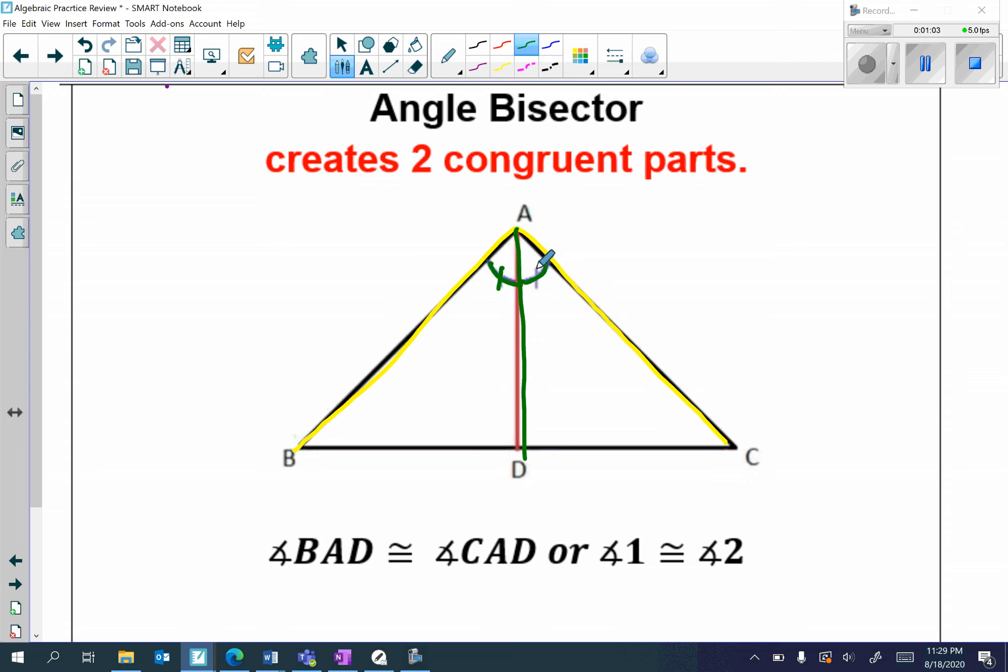This angle and this angle. So, angle BAD is congruent to CAD, or remember, I can label each angle as 1 and 2. Angle 1 is congruent to angle 2. Make sure to label the diagram with 1 and 2 as well. Remember, an angle bisector creates two congruent parts.